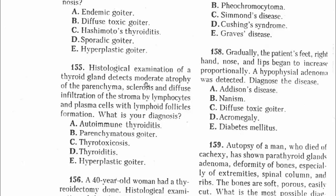Question 155: Histological examination of a thyroid gland detects moderate atrophy of the parenchyma, sclerosis, and diffuse infiltration of the stroma by lymphocytes and plasma cells with follicle formation. This is Hashimoto thyroiditis, also known as autoimmune thyroiditis. The answer is autoimmune thyroiditis.